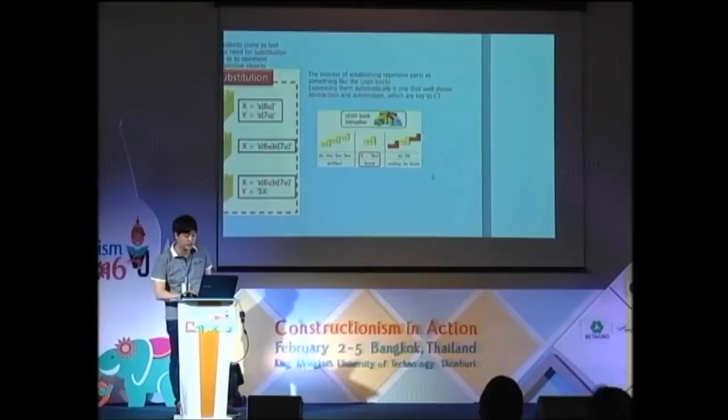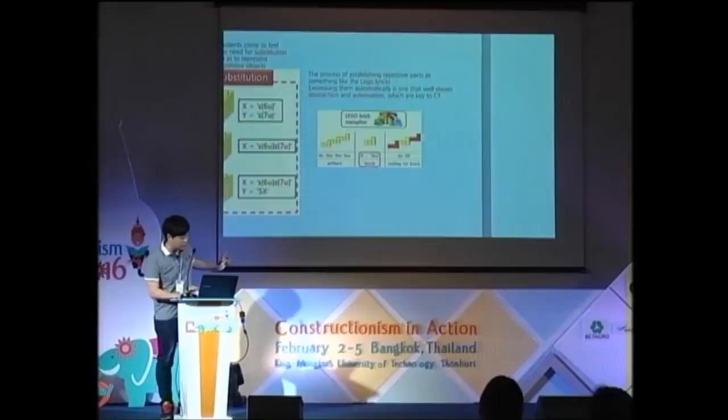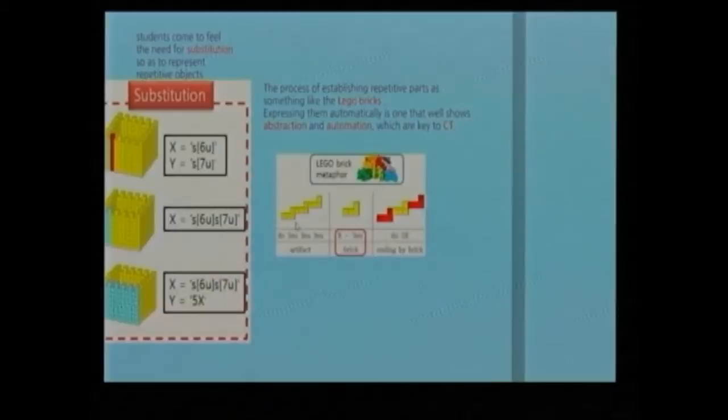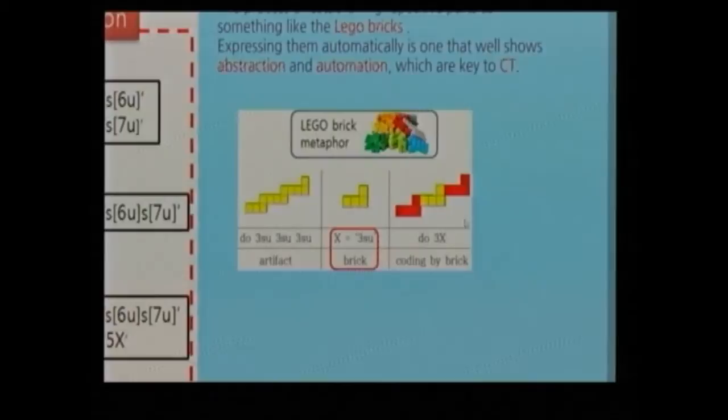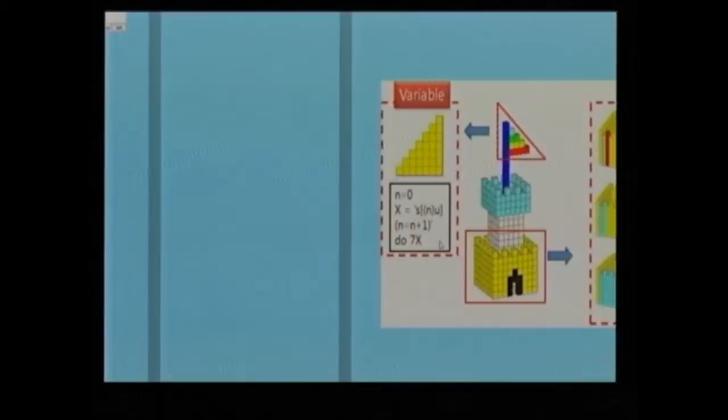This is the Lego brick metaphor. If we make this with just simple code, it will be SSSU SSSU SSSU SSSU. But if we make one brick, we can make this by 3X. This is a mental tool — perceiving a repeated object as a pattern and expressing it as a single symbol. Moreover, a variable is also a mental tool related to sequence.